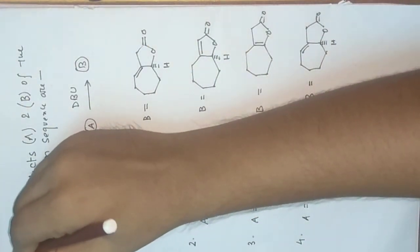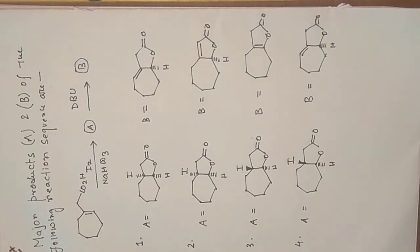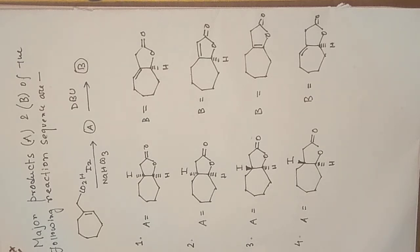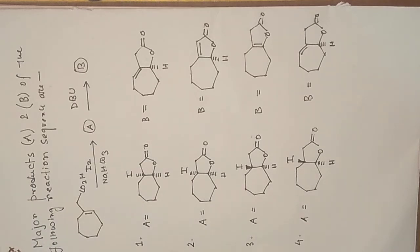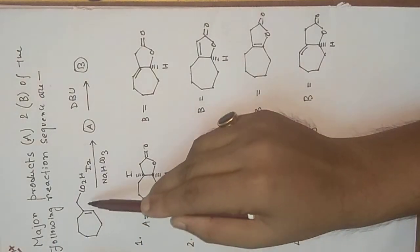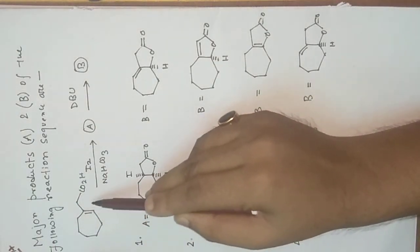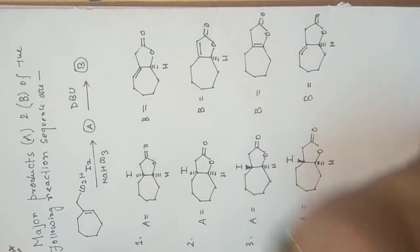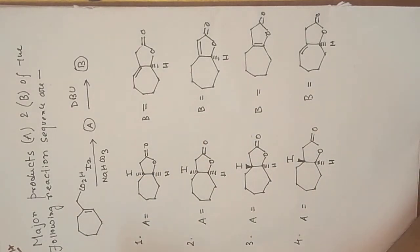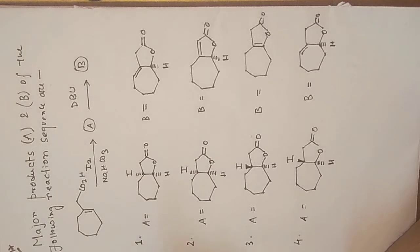This problem came in the CSR exam 2017 and is based on the iodolactonization reaction. The iodolactonization reaction is based on two concepts: the formation of a cyclic iodonium ion on the double bond, followed by nucleophilic attack. Since the iodonium ion is formed and nucleophilic attack occurs from the backside, during the iodolactonization reaction, always the trans product is obtained.